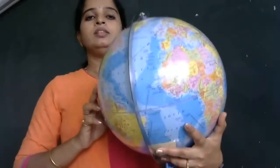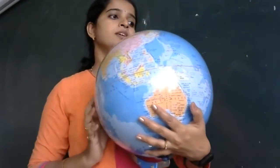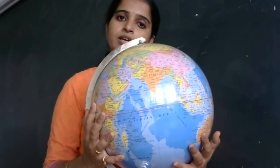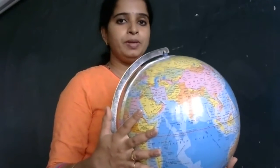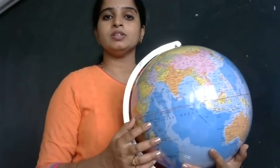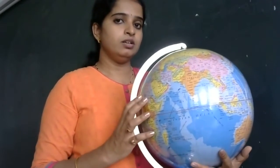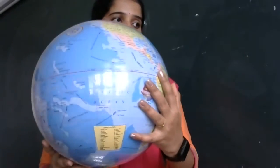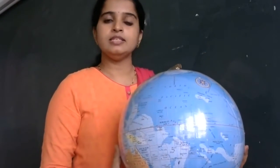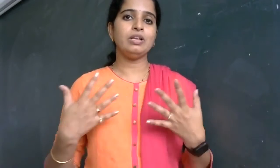This is the globe, and most of the globe is covered with blue color. Why is it blue in color? Because the Earth is covered with 75% water — three-fourths of water and one-fourth of land. Most of the part of the Earth is covered with blue, and this is the reason we call our Earth the blue planet.